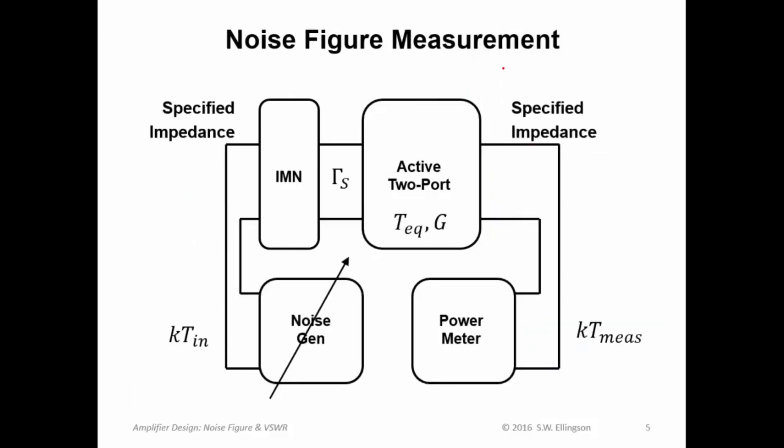There are a number of ways to measure noise figure, but a pretty good way of thinking about how this works is shown here. In general, what I do is I have a noise generator, and this arrow here indicates that it is a variable noise generator. That is, I can generate different amounts of T sub N. In other words, I can make the power spectral density of the noise output from the noise generator variable. And then the output, I have a power meter. The power meter measures whatever power spectral density emerges from the output of the two-port.